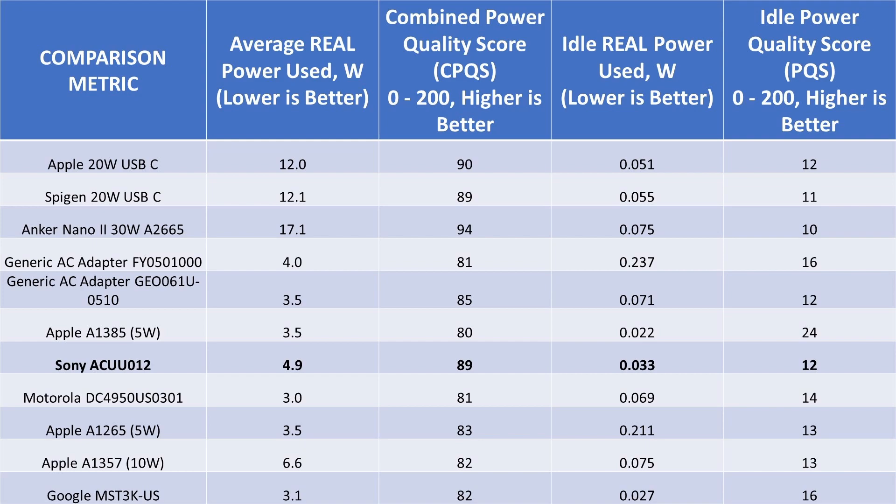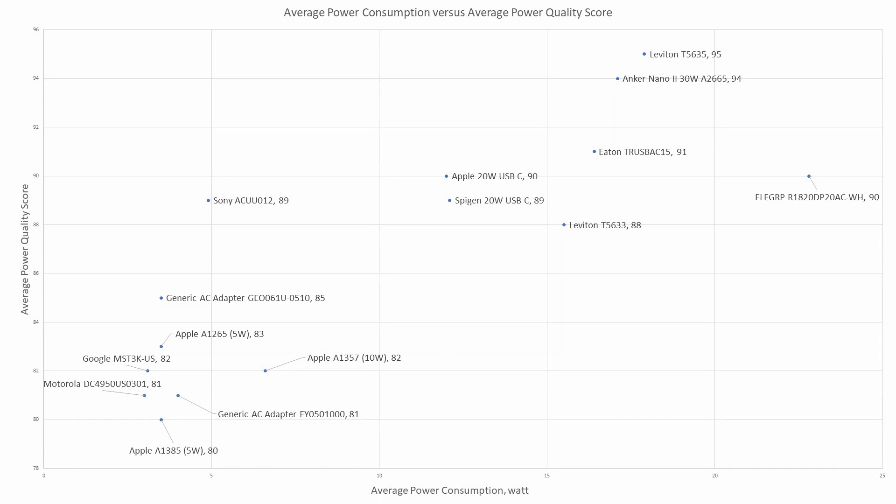Next, let's look at the average power consumption and the average power quality scores. Obviously the average power consumption is going to be higher for higher power class devices, so this isn't a penalty. In general, under load, we can see that the power quality of these devices is almost identical. The Sony stands alone as the leader under load. The graph also shows this same conclusion.